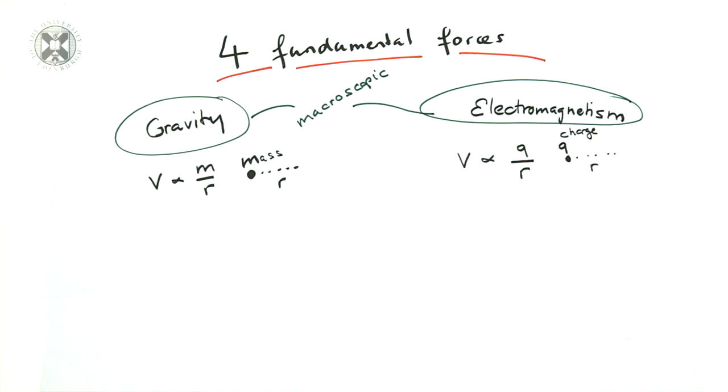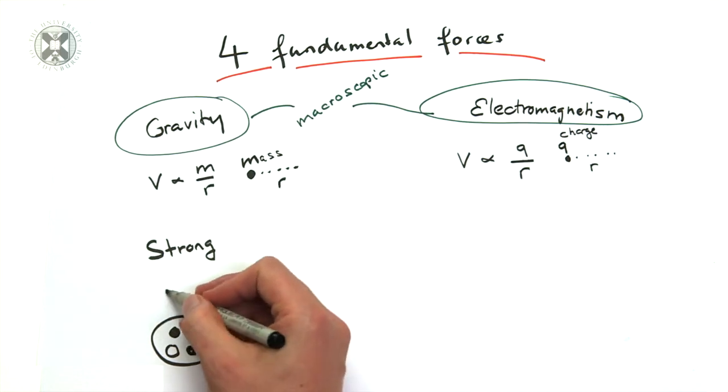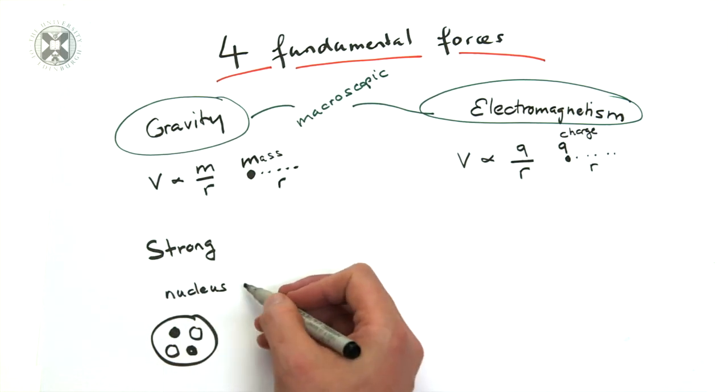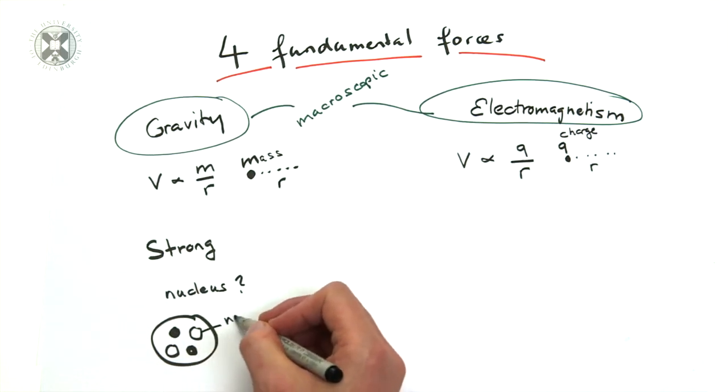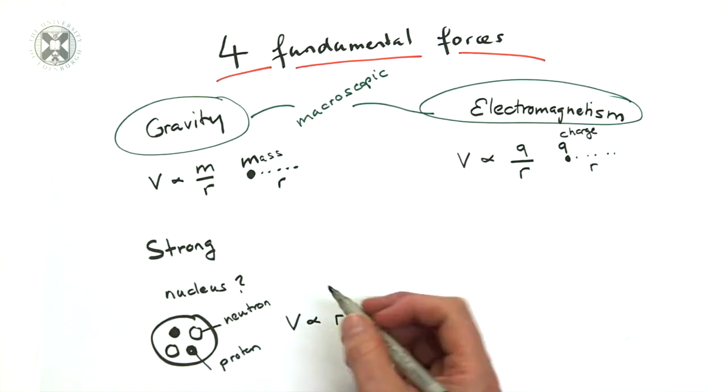In the advent of the age of particle physics, it became clear that there ought to be more forces. First, the nucleus made out of protons and neutrons is held together very strongly. Gravitation is too weak and electromagnetism is repelling as protons carry positive charge. Hence, there has to be a strong force binding the nucleus together, which operates on the microscopic or nuclear scale.